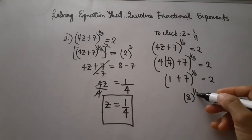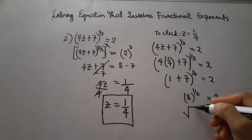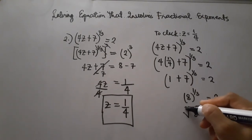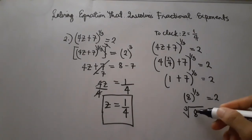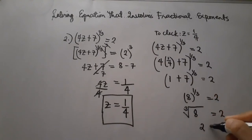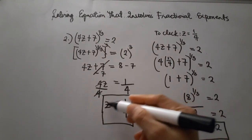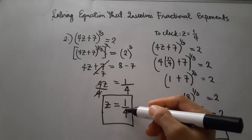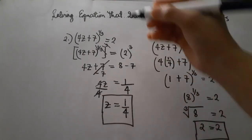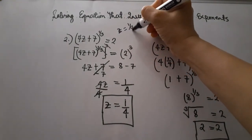Using the radical sign, with the index 3, we get the cube root of 8. The cube root of 8 is equal to 2, since 2 times 2 times 2 is equal to 8. Therefore, our answer z equals 1 fourth is correct.